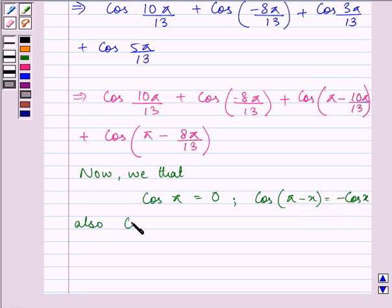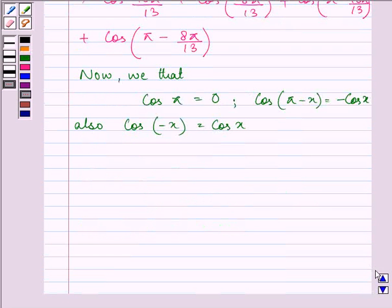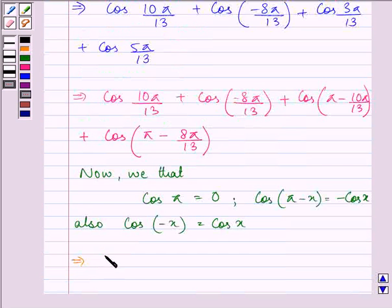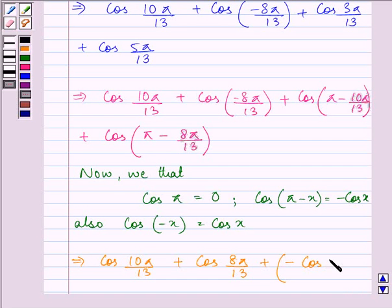Now, if you carefully analyze, this is cos(-x). So we can write it as, this cos(-x) will be written as cos x only. So it will be cos 8π/13 plus cos(π - x). cos(π - x) is minus cos x. So here we will write it as minus cos x. And now, here x is 10π/13.